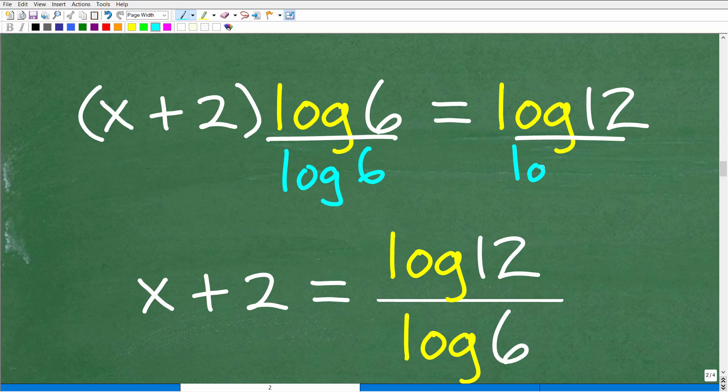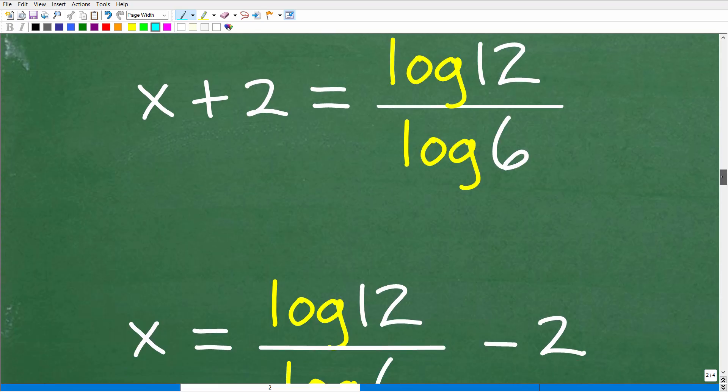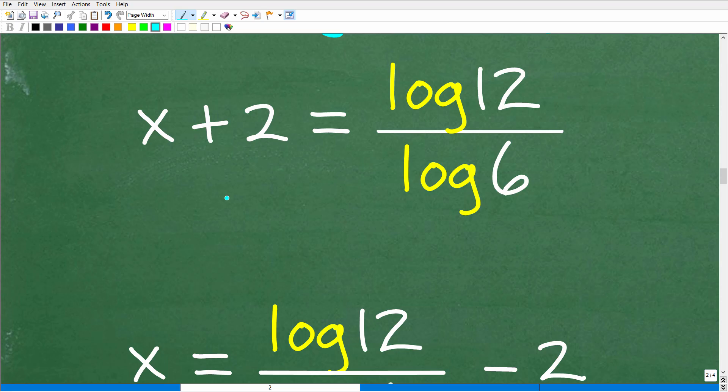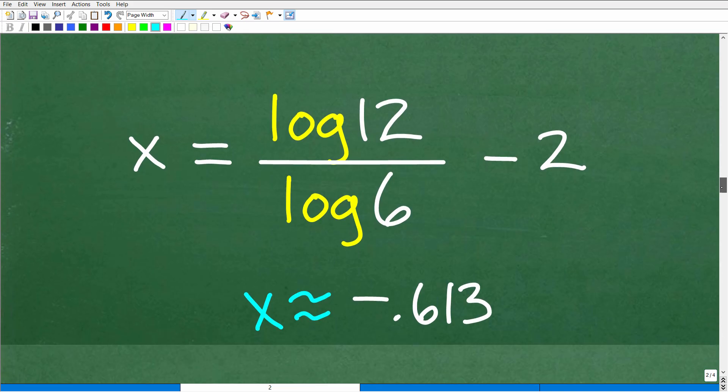Again, this just is a value. Now you could distribute, but you could also just divide both sides, that's the easier way to go. So now I have x plus 2 is equal to log 12 divided by log 6. All right, so to solve for x, it's super easy, right? All I have to do is subtract 2 from both sides of this equation, and what I have here is x is equal to log 12 divided by log 6 minus 2.